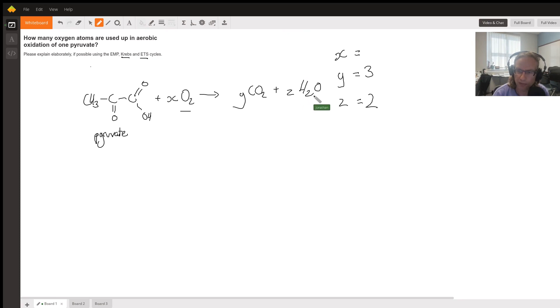So then if we add up how much oxygen is on this side when y equals 3 and z equals 2, we find that we're going to have six oxygens here and two more here, so that will be eight in total. We've got three oxygen atoms on this side, so that means we need five more oxygen. So x would then be equal to 2.5, and we've already answered the question.